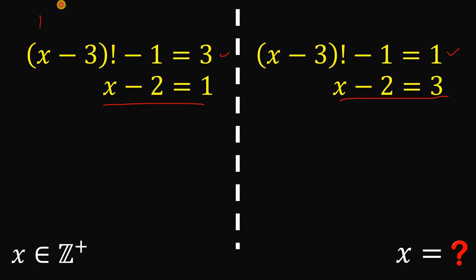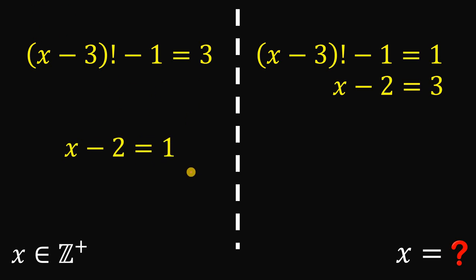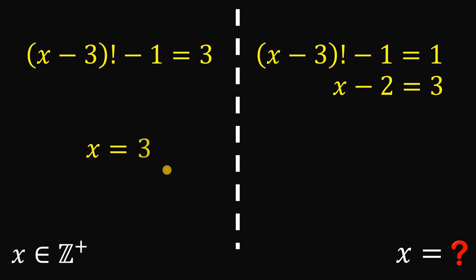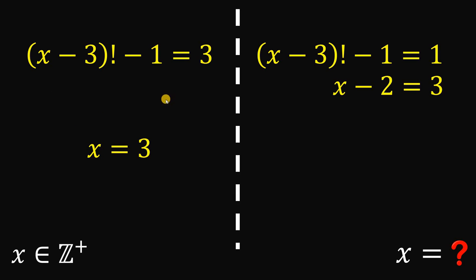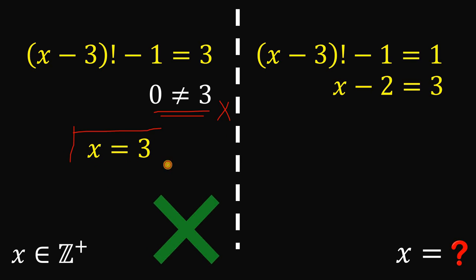For Case 1, solving x minus 2 equals 1 gives x equals 3. Let's check: x minus 3 factorial minus 1 becomes 3 minus 3 factorial minus 1, which is 0 factorial minus 1, which equals 1 minus 1 equals 0. Since 0 is not equal to 3, this is a contradiction. Therefore, x equals 3 is not a valid solution.